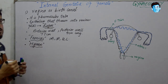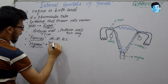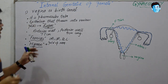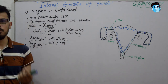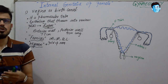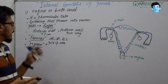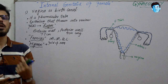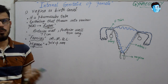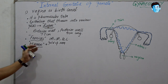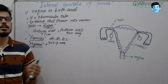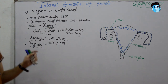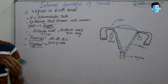Normally the hymen contains one pore; sometimes it contains more than one pore through which menstrual blood passes. If the hymen has no pore, it leads to a condition called hematocolpos, which means blood is accumulating in the vagina. The hymen is an important structure, and in some cultures it is considered a primary sign of virginity, but that is a misconception. Remember that the hymen is not a primary sign of virginity.